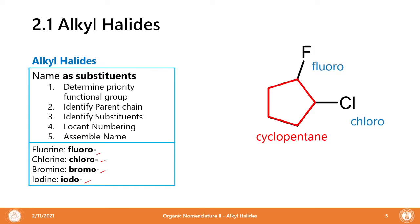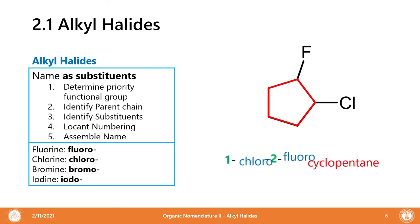We identify the substituents: we have fluoro, denoted by F, and chloro, denoted by Cl. Then we start locant numbering. We can start anywhere because it's a cyclic compound, but we must start closest to a substituent. You can start either with fluoro or chloro, but we choose chloro because it is lower in alphabetization — C comes before F — so chloro gets number one. We then assemble the name: 1-chloro-2-fluorocyclopentane.